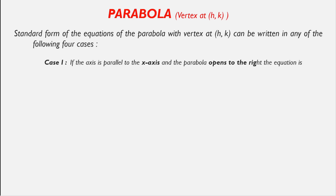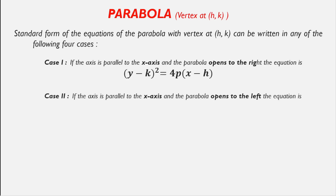Case 1: If the axis is parallel to the x-axis and the parabola opens to the right, the equation is (y - k)² = 4p(x - h). Case 2: If the axis is parallel to the x-axis and the parabola opens to the left, the equation is (y - k)² = -4p(x - h).